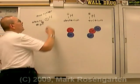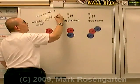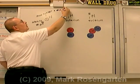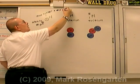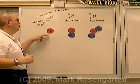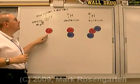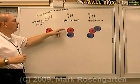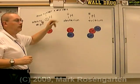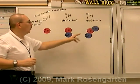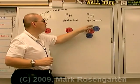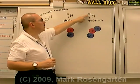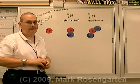The mass number is equal to the number of protons plus the number of neutrons. One proton gives a mass of one. One proton plus one neutron gives a mass of two. One proton plus two neutrons adds up to a combined mass of three.